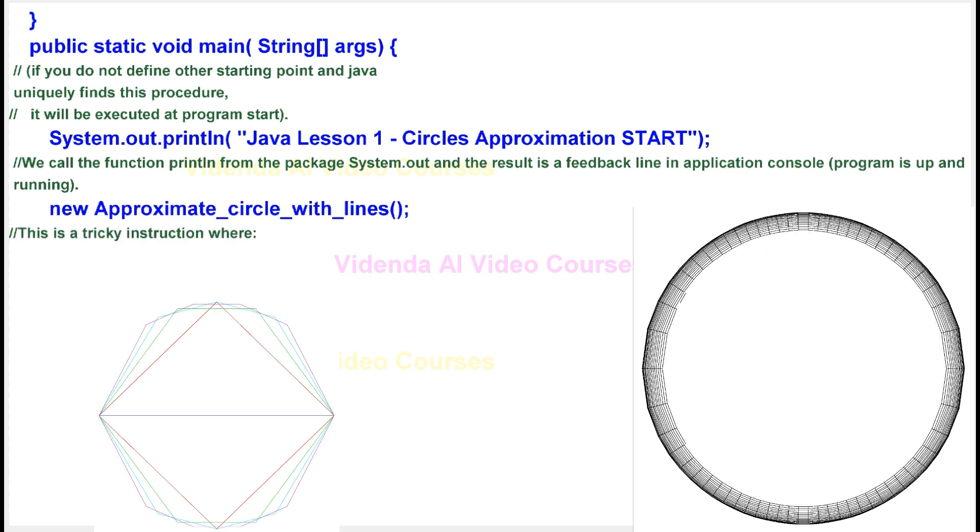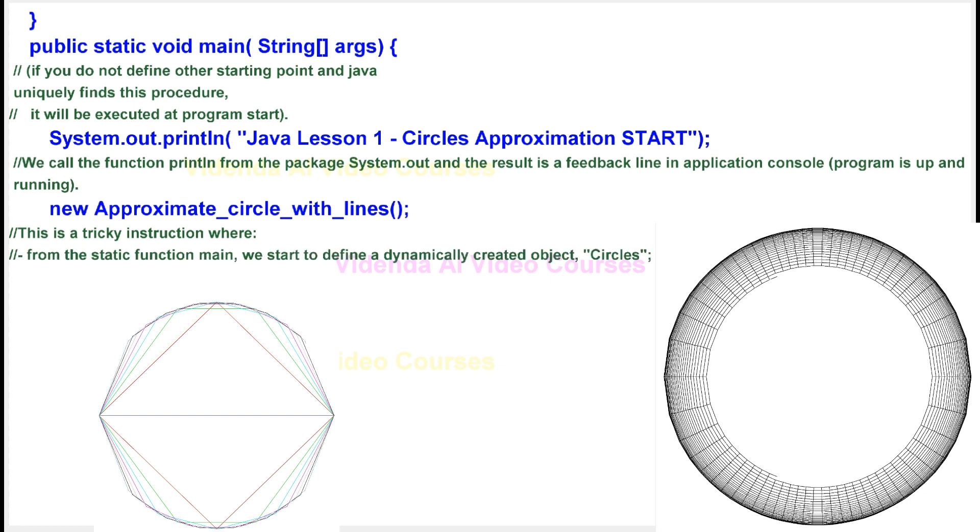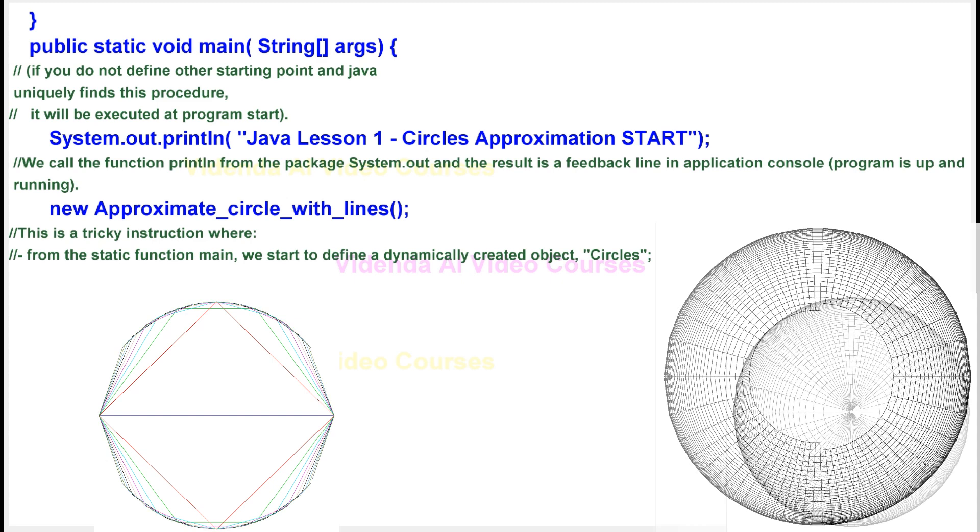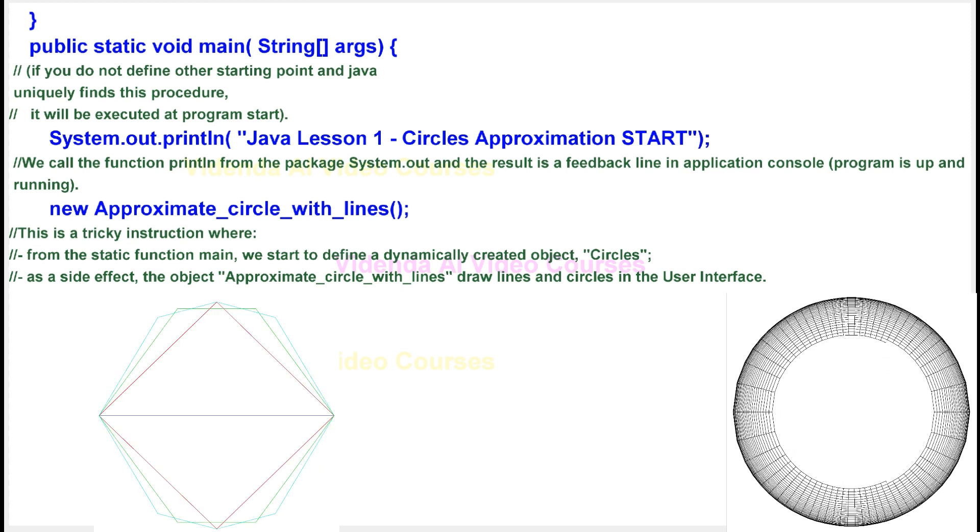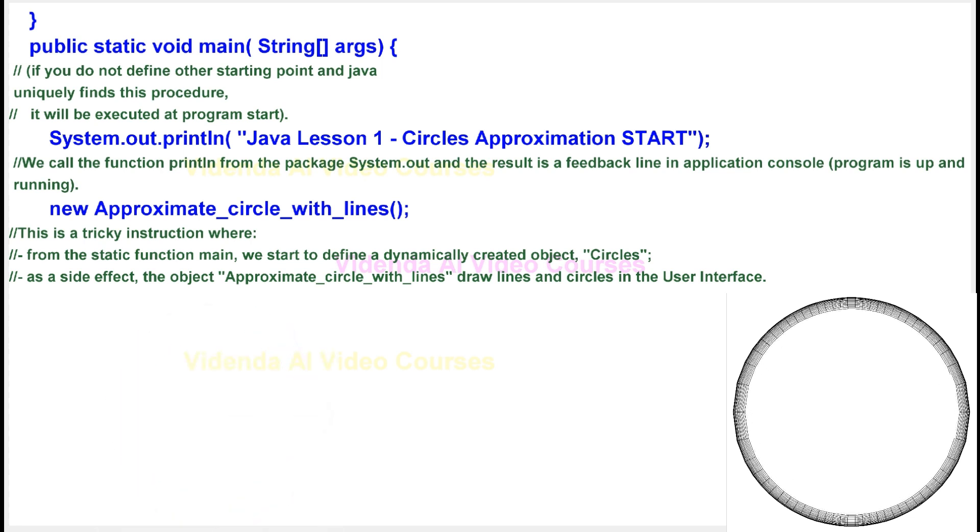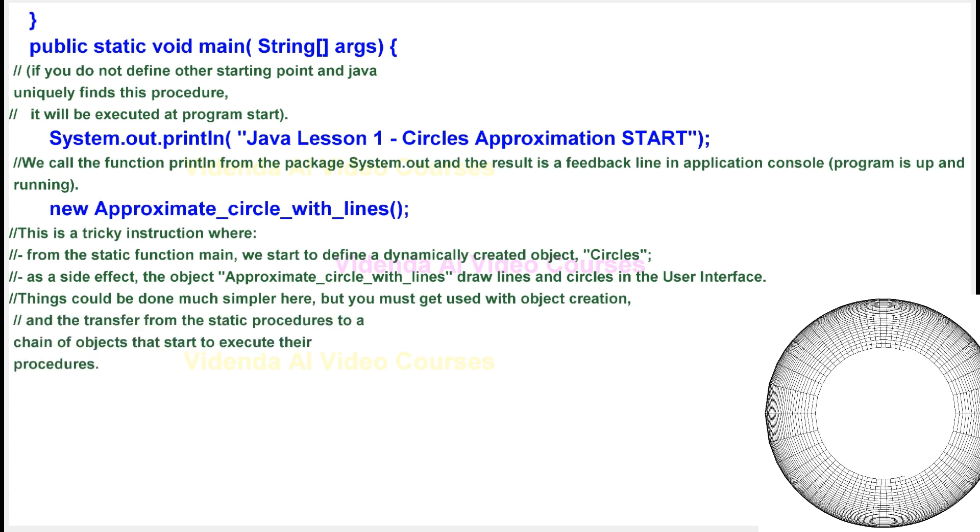This is a tricky instruction where from the static function main, we start to define a dynamically created object, circles. As a side effect, the object approximate_circle_with_lines draws lines and circles in the user interface. Things could be done much simpler here, but you must get used with object creation and the transfer from the static procedures to a chain of objects that start to execute their procedures.